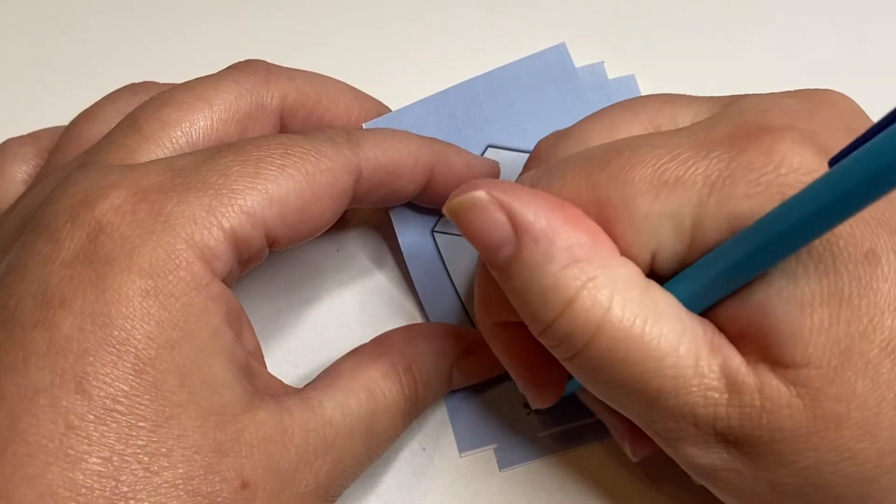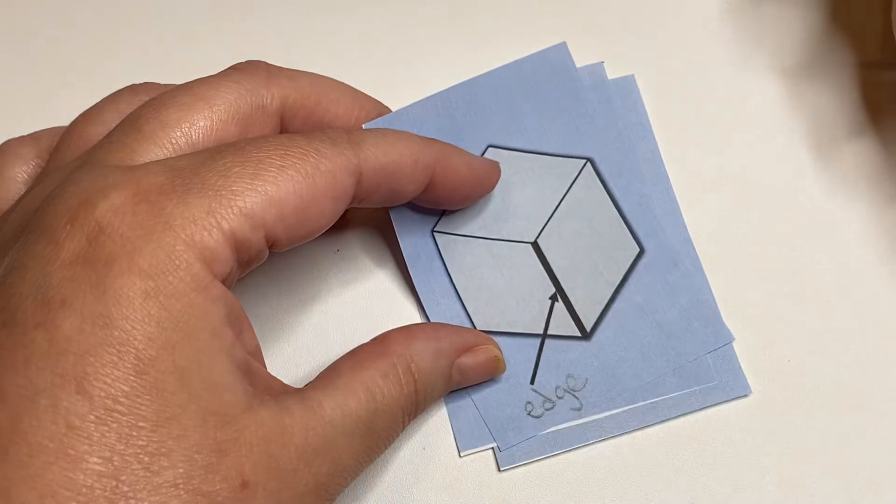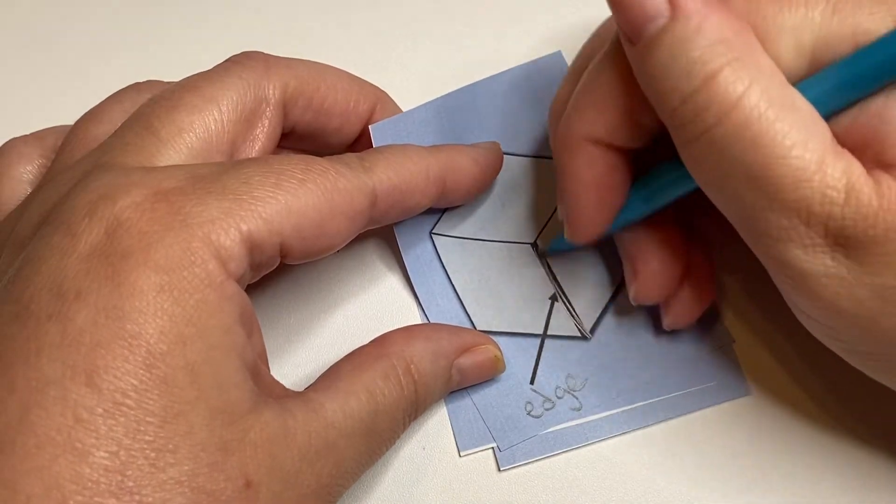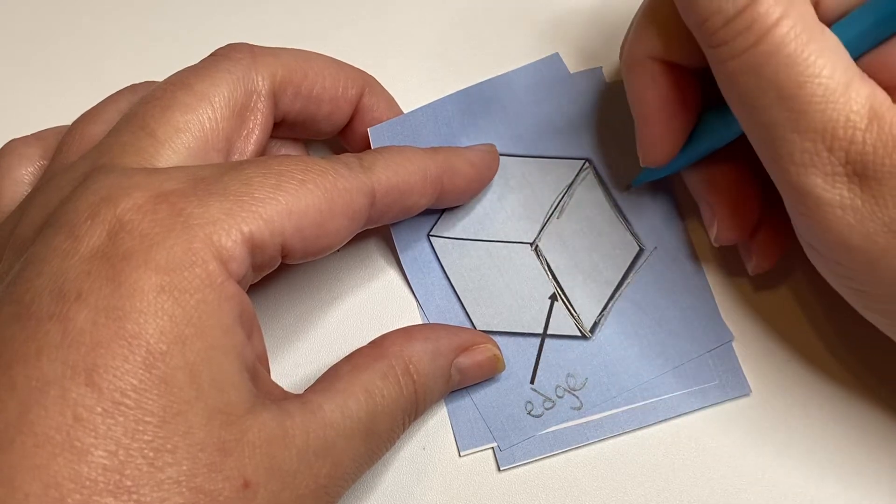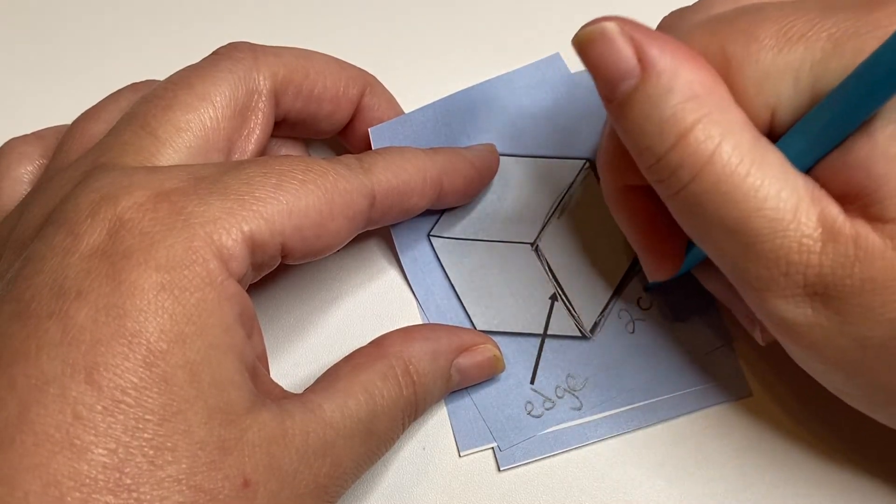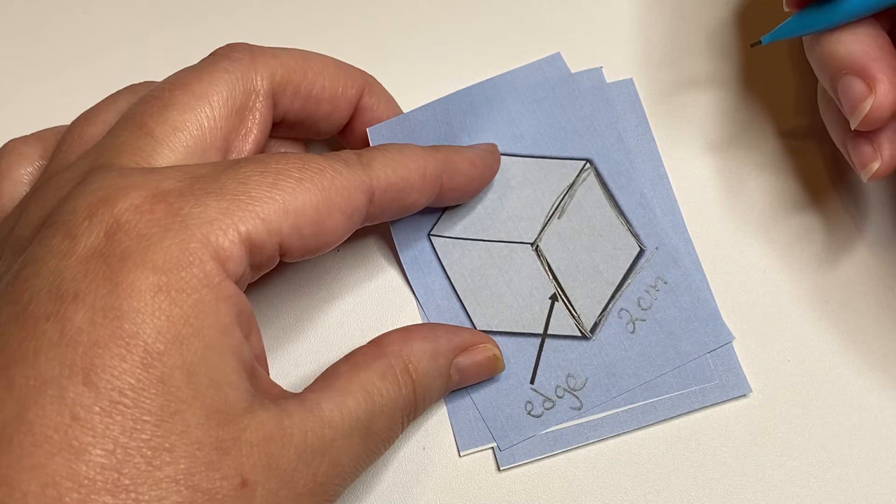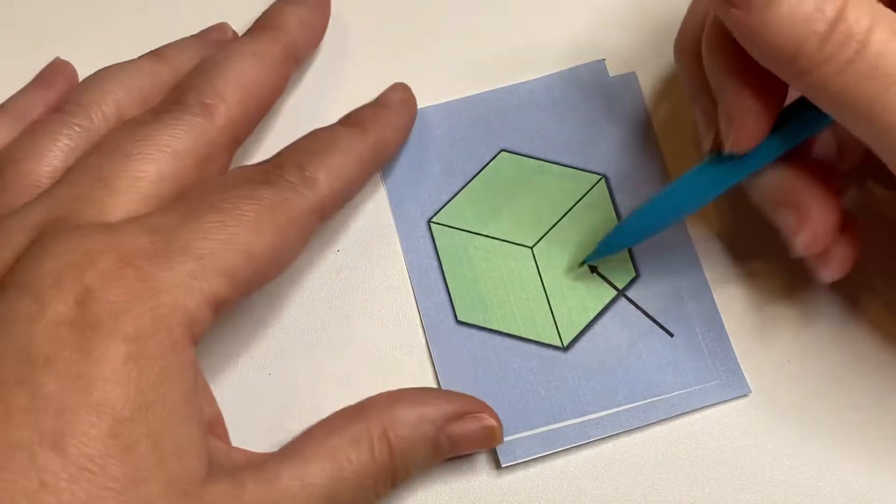So this is an edge. There's lots of edges, and that's the part that we usually have a measurement for, like two centimeters or something like that. This is the face.